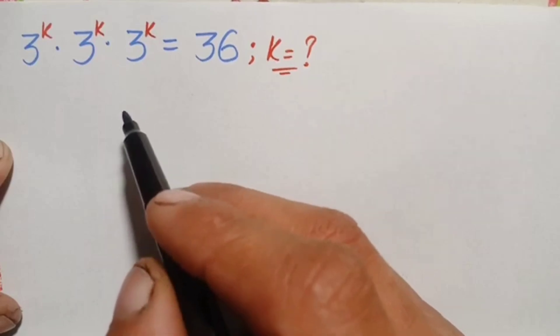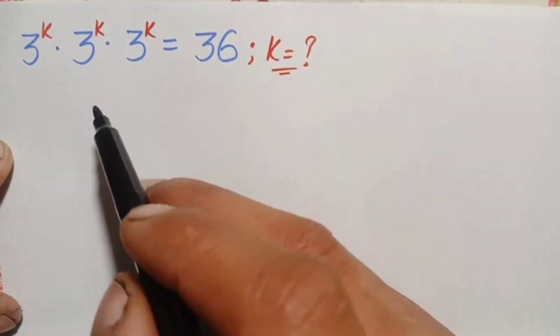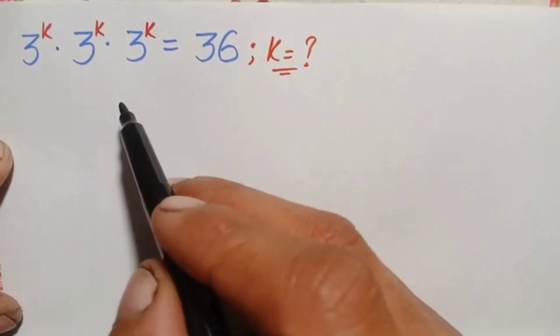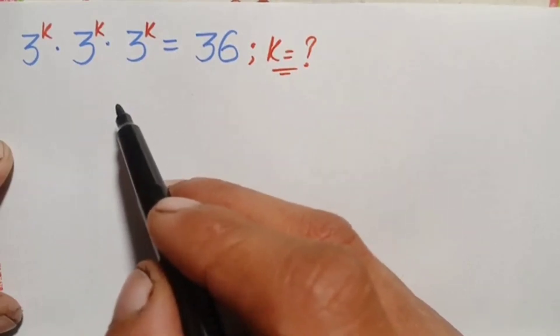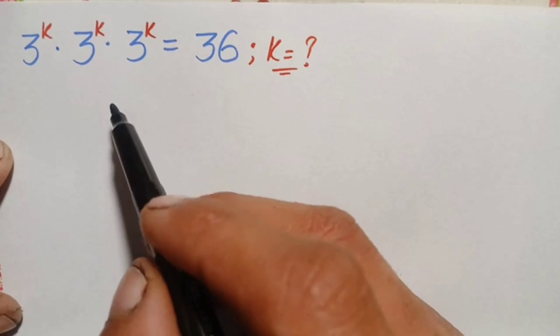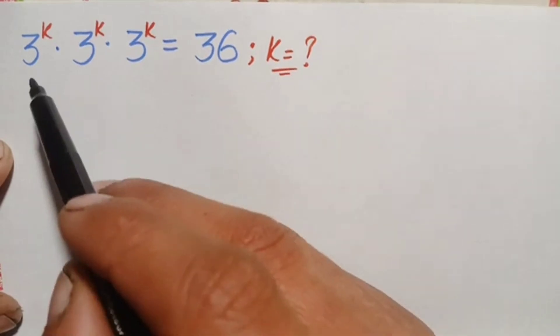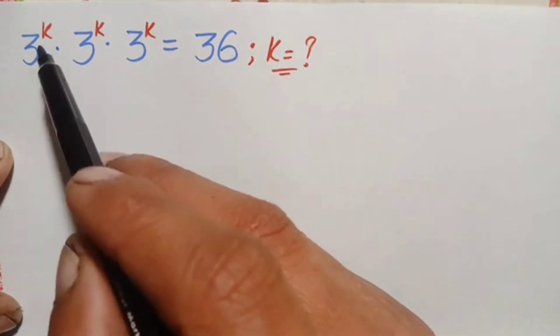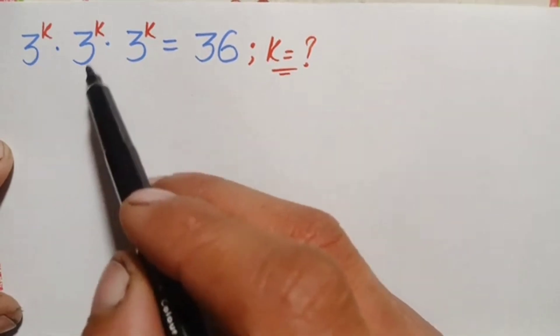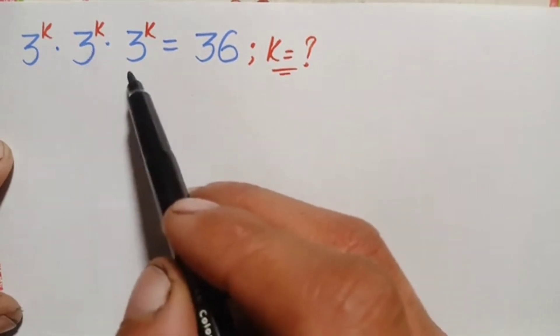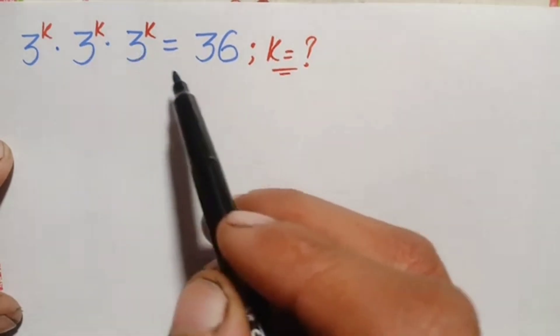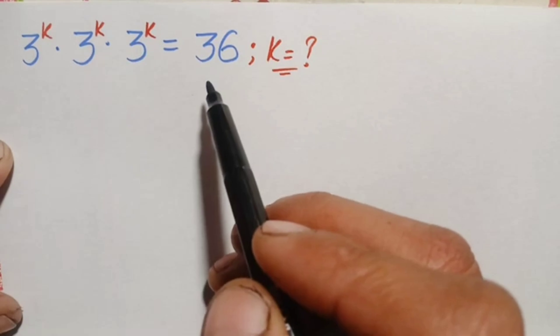Hello everyone, welcome back to Math Explorer. Today we solve this interesting exponential math problem: 3 raised to power k, times 3 raised to power k, times 3 raised to power k, is equal to 36.